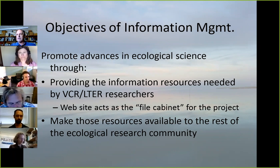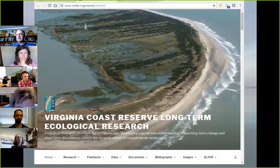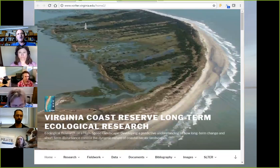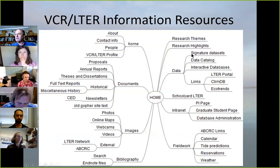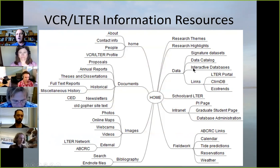We also want to make sure we're good participants in the larger community. This is our current website — it has a giant picture of one of our barrier islands, showing what the Virginia Coast Preserve looks like. We're going to be focusing on the data section of it, but there's a lot of other things we try to put on the website to promote the science.